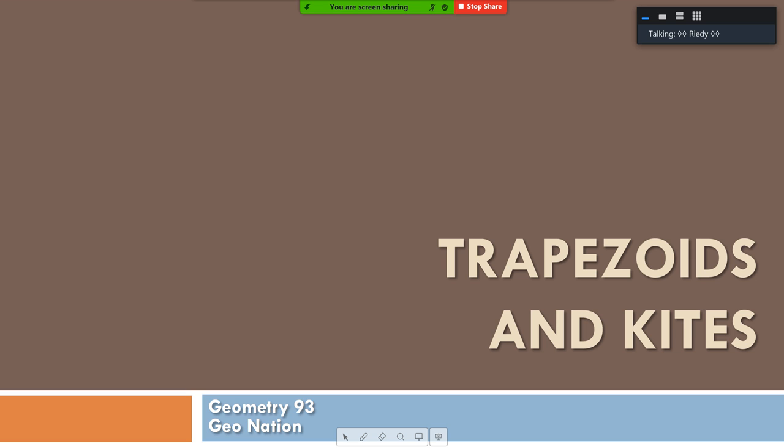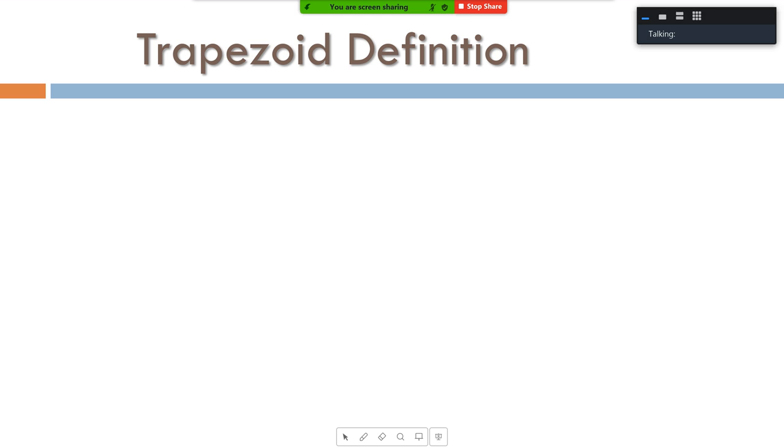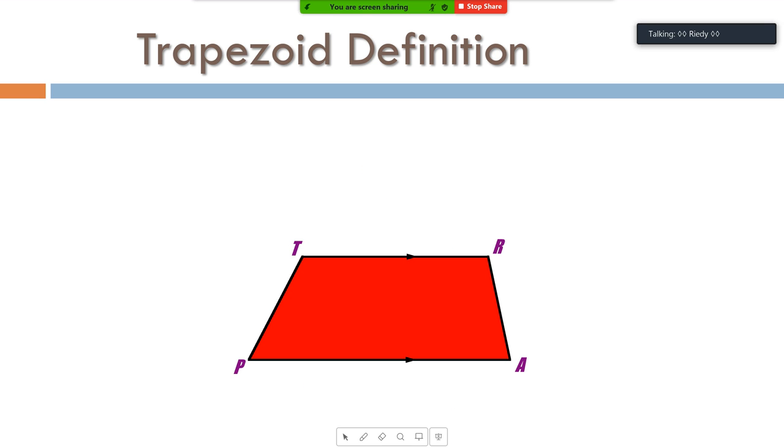That is not working. Wait for it. That is a trapezoid. You'll notice those little pesky arrowheads. John, what do those arrowheads mean? Outstanding.